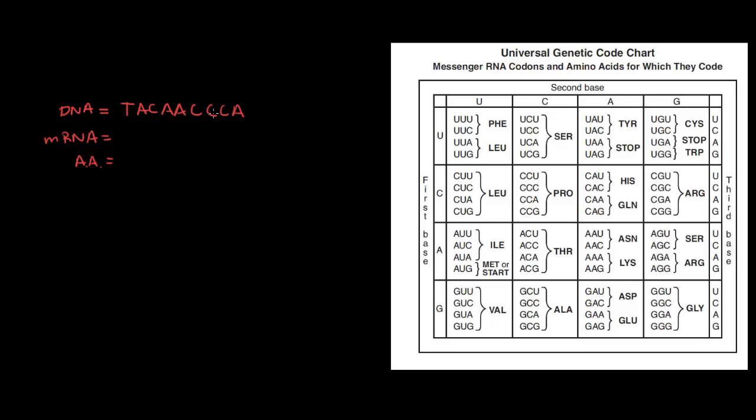All right, we have a string of DNA and there are nine bases. If I didn't have this labeled DNA right here, you'd still know it was DNA because it contains a T. If it contained a U, it would be mRNA.